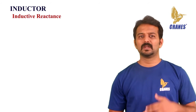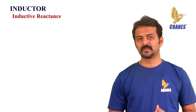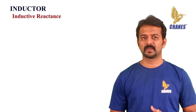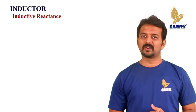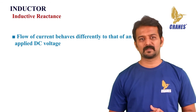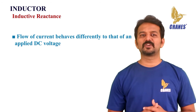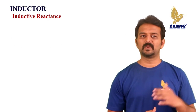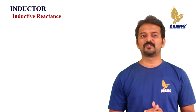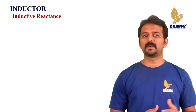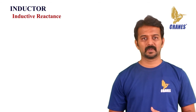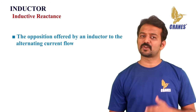Let's discuss inductive reactance. When an AC voltage is applied across an inductor, the flow of current behaves differently compared to a DC voltage. The effect of a sinusoidal supply produces a phase difference between the voltage and the current waveforms. In an AC circuit, the opposition to current flow through the coil windings depends not only upon the inductance of the coil but also the frequency of the AC waveform.